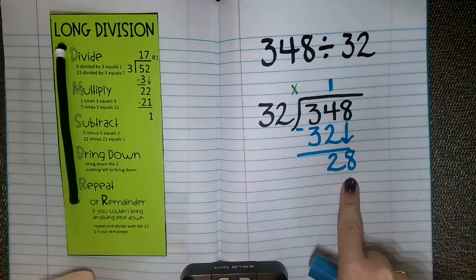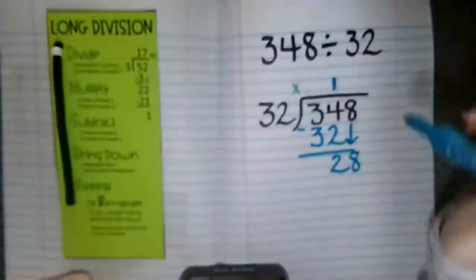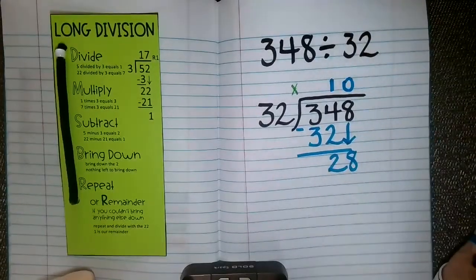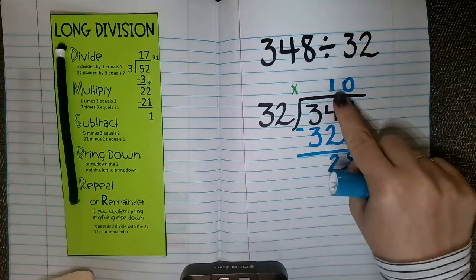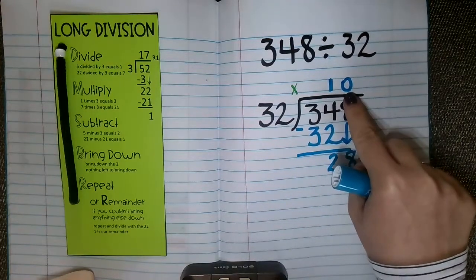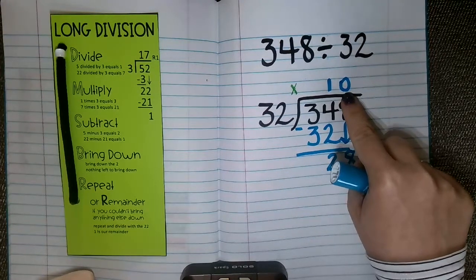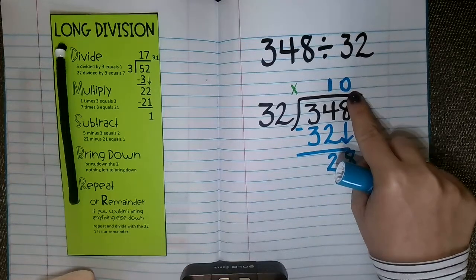So I have to ask myself, if it cannot fit into 28, that means 32 fits into 28 zero times. I know this has been a little tricky for some of my kiddos in the past, but we need to remember that if we had this 1 in our tens place, we had to have some digit in our ones place. And that's okay that that digit was a 0, because now part of our quotient is the whole number 10.